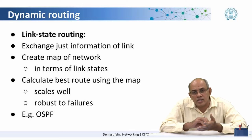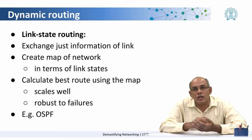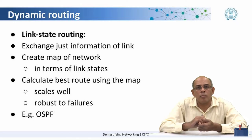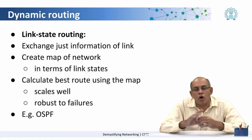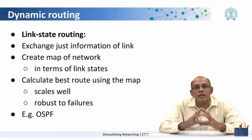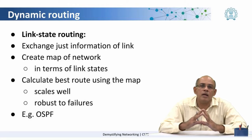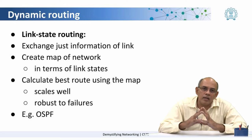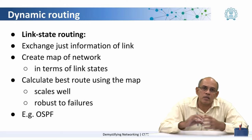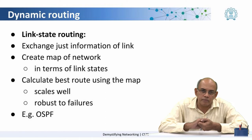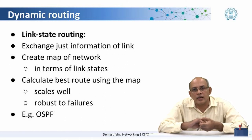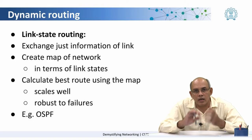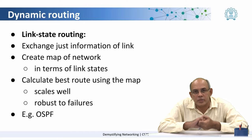Then the router uses this topology in order to determine what is the next hop for sending a given packet. This is a very commonly used mechanism in internet routing, because it scales quite well and it is also robust to failures in the network.